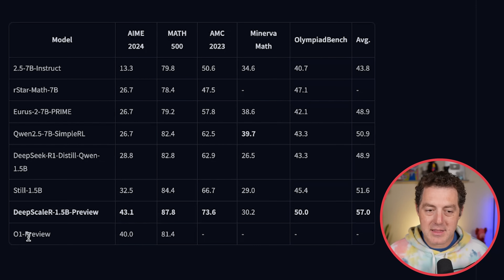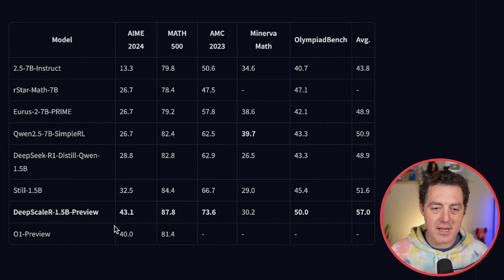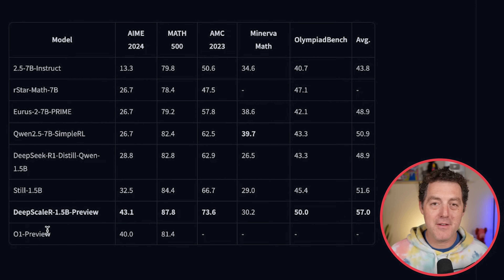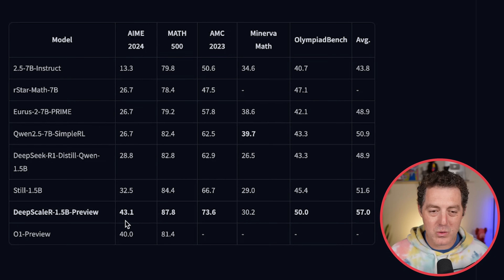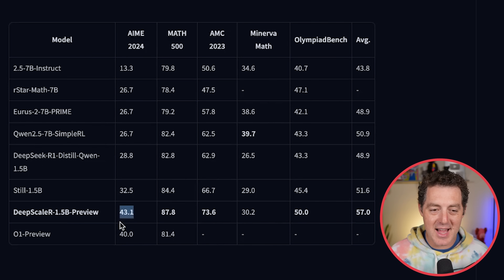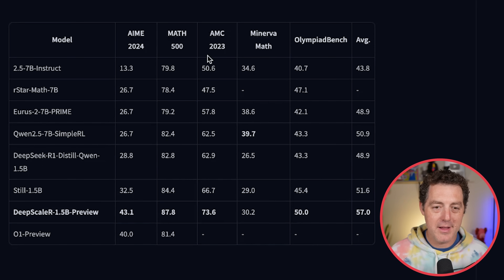At the bottom we have O1 Preview, and right here we have DeepScaler. Remember, O1 Preview is a massive, massive model. DeepScaler is 1.5 billion parameters. Here's the AIM 2024 score: 43.1 — best in class compared to O1 Preview, which is a 40.